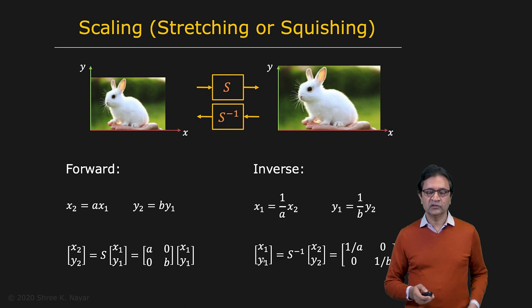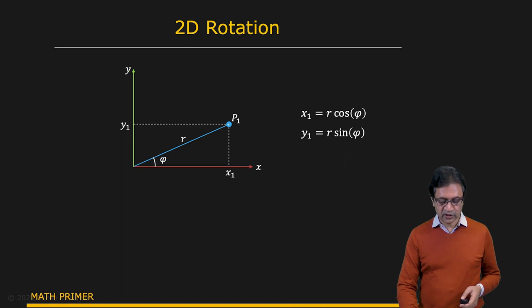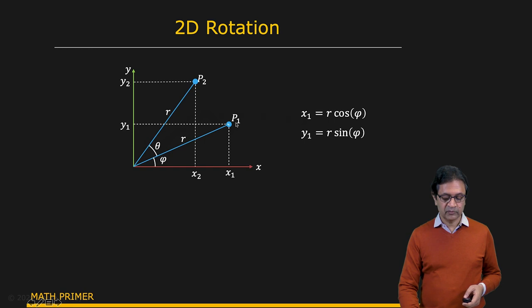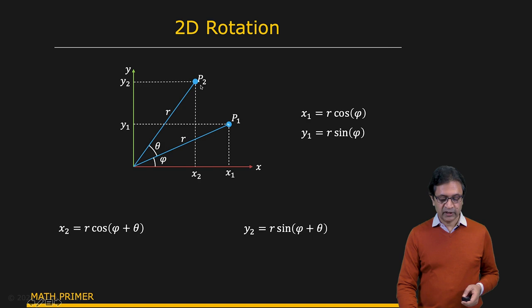Now let's do something a little bit more interesting. Let's say that you wanted to rotate an image. So let's see how rotation works. Here's your point P1, which has coordinates X1, Y1. We can represent this in polar coordinates as R and psi. So you have X1 equal to R cosine psi and Y1 is equal to R sine psi. And let's say we wanted to rotate this point by an angle theta right here. So when you rotate it by theta, you end up at P2, which has coordinates X2, Y2.